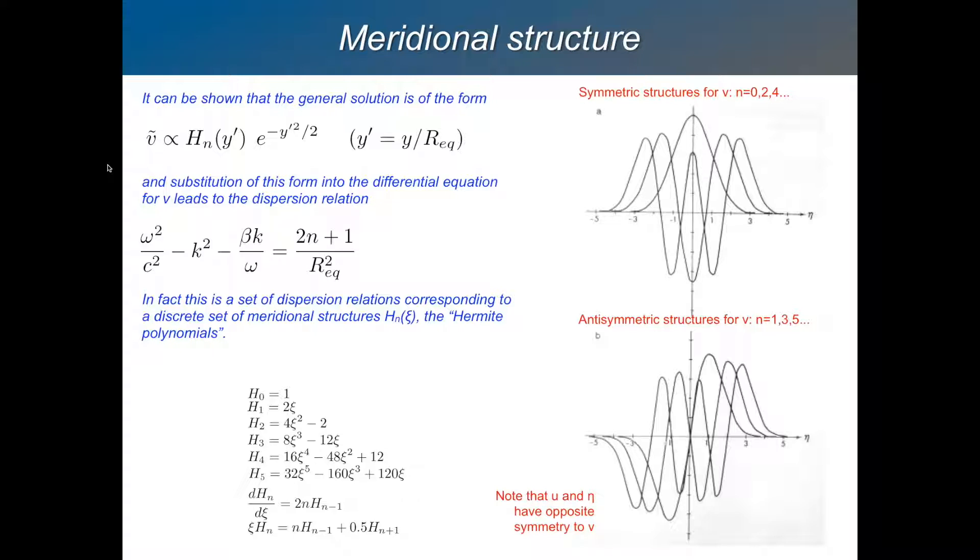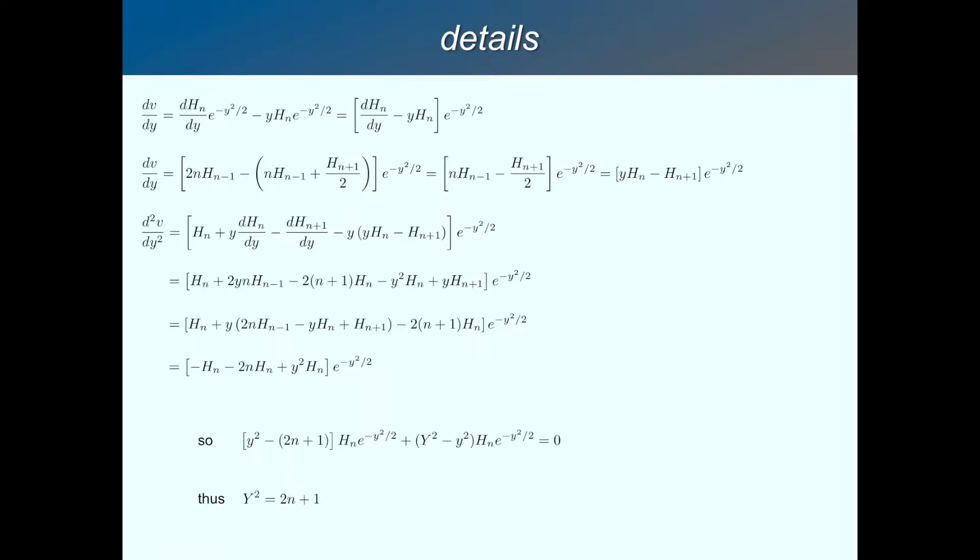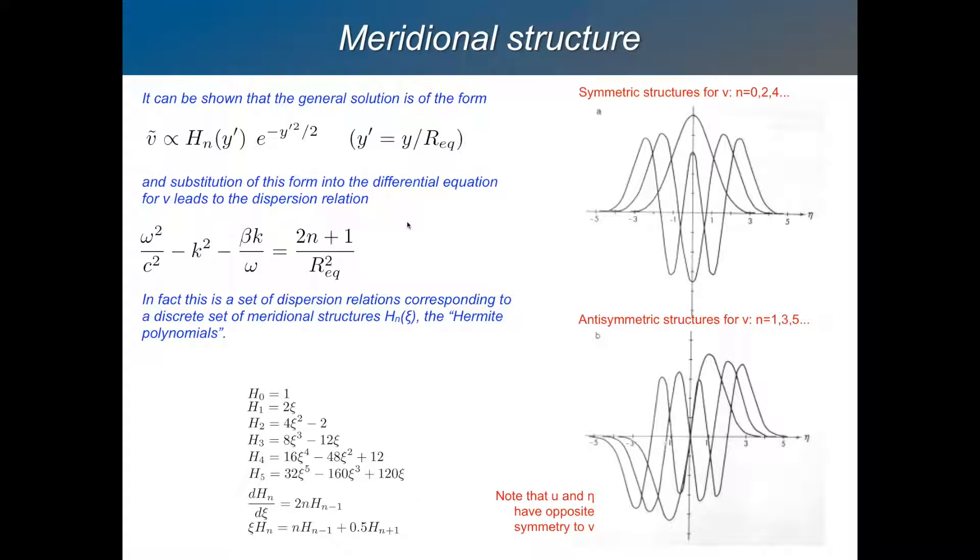What about the propagation? So you can substitute these solutions into the equations and you can get this dispersion relation. This is the dispersion relation for all kinds of tropical waves, including Kelvin waves. And you'll have a different kind of wave for different values of n, n being the index for the Hermite polynomials. And so that's a whole family of dispersion relations. And it's basically cubic in omega because you've got omega squared up here. You've got another omega down there. So effectively, it's a cubic equation for omega. And for each value of n, in principle, you've got three solutions for omega. So let's see what they look like.